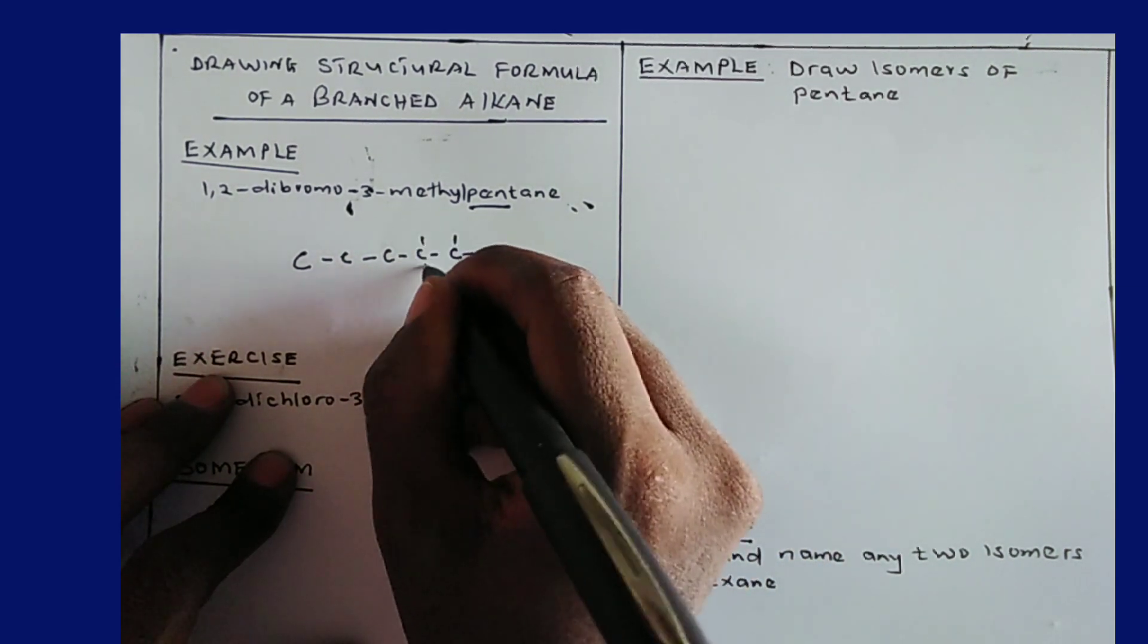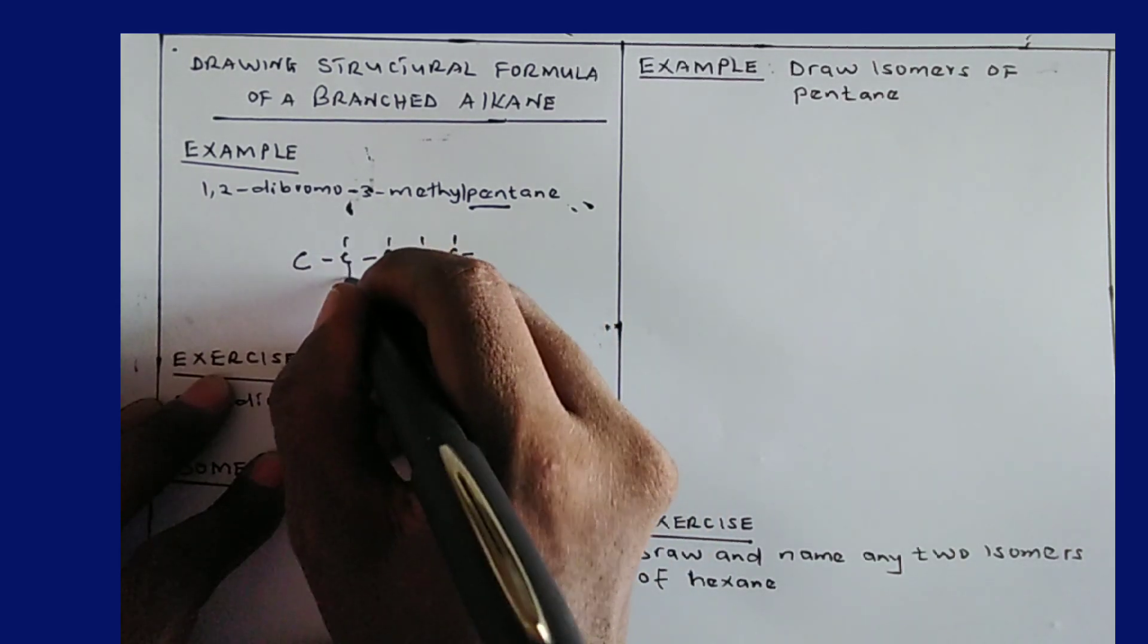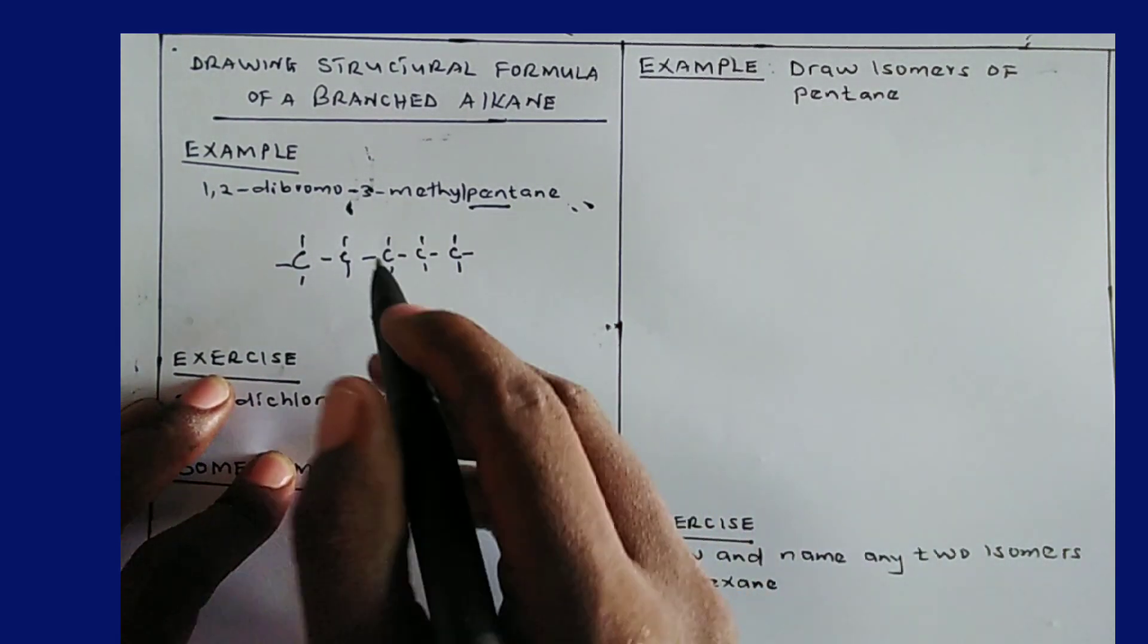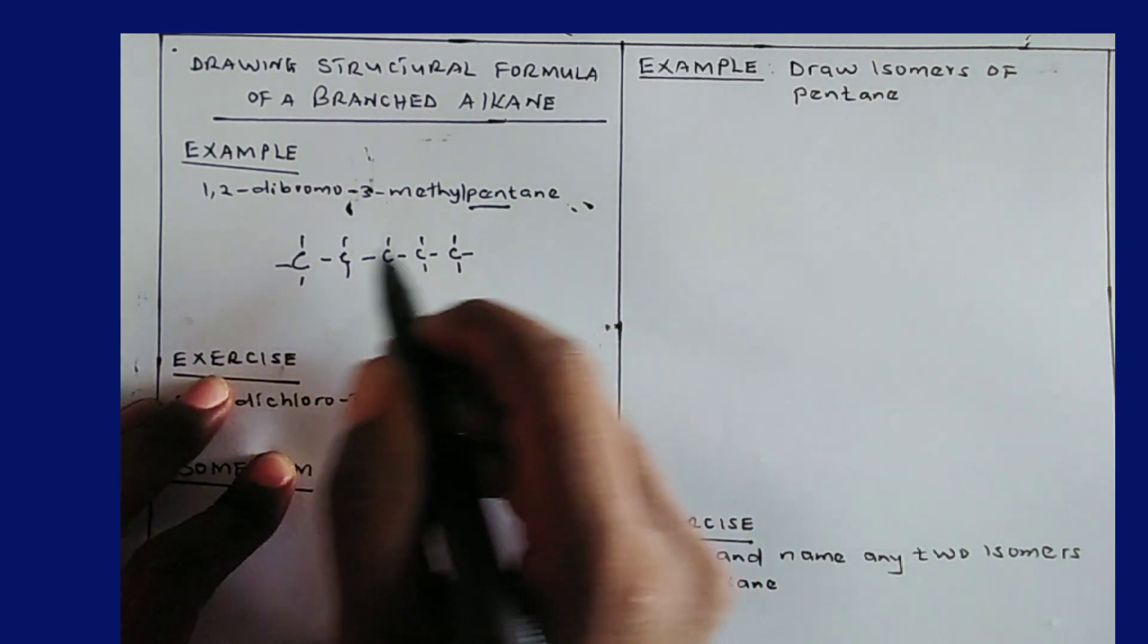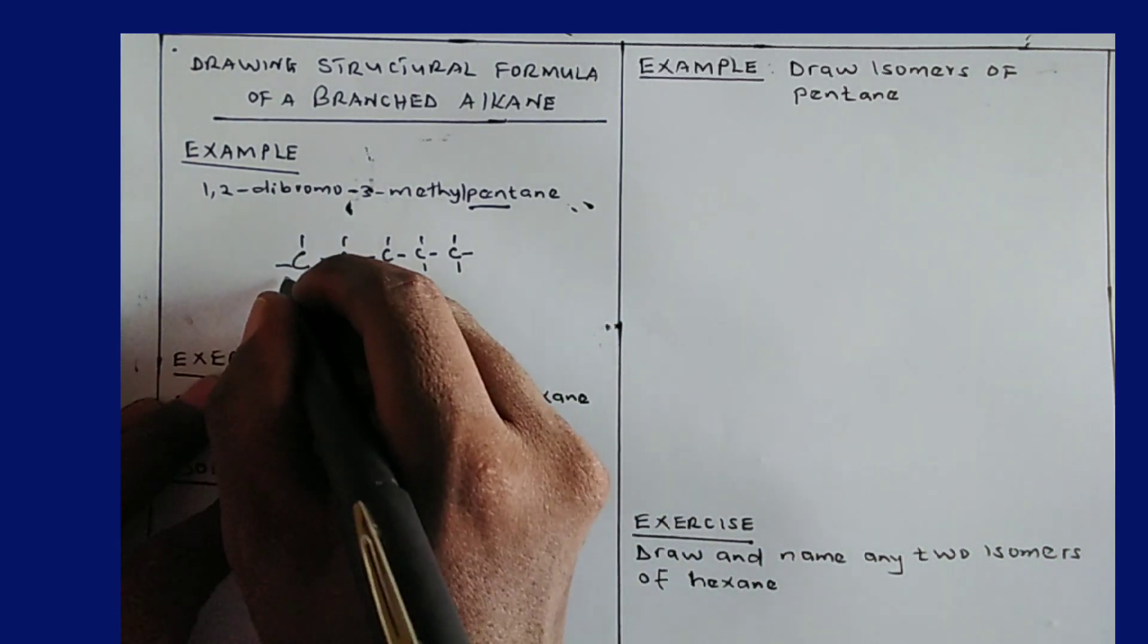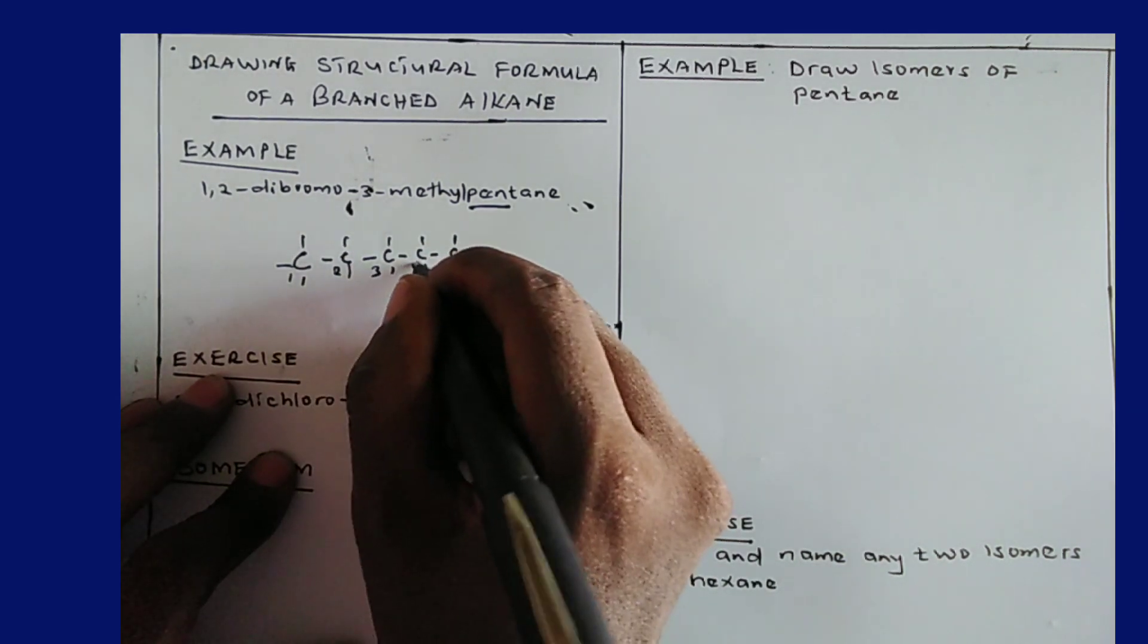Then we make sure all the bonds are four. Then step number two, you number the carbon atom from either end, either this side or from this side here. I say here number one, two, three, four, five.